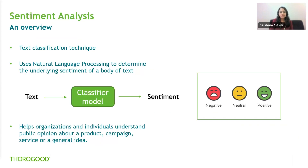Moving on to what sentiment analysis is — it is a technique that uses natural language processing to determine the underlying sentiment of a given text. It uses machine learning to identify and classify the polarity in the content into different buckets: positive, negative, and neutral. Sentiment analysis can help businesses understand how users are perceiving their brand or product, or a marketing campaign, most commonly from what they post on social media.